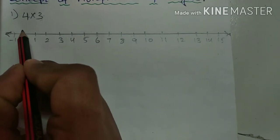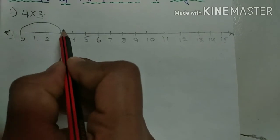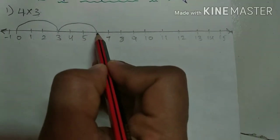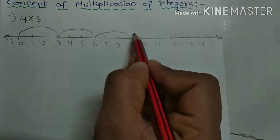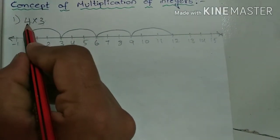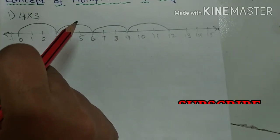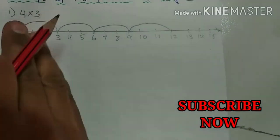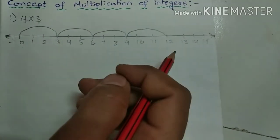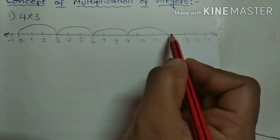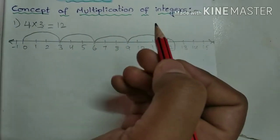From zero, count three steps — one, two, three — that's the first jump. Again one, two, three — second jump. Again one, two, three — third jump. Again one, two, three — fourth jump. We make four jumps of three steps each because this is a positive integer multiplication, so we move to the right. The answer is 12. So 4 × 3 = 12.